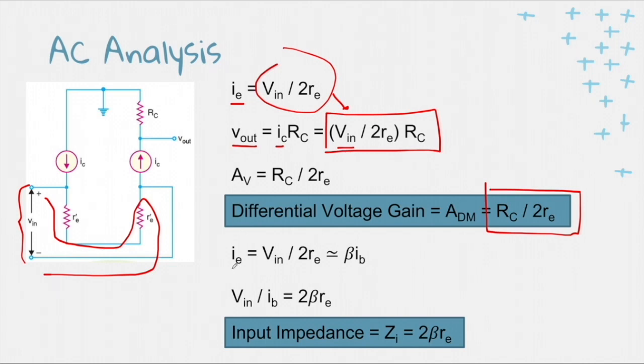And since IE is equal to IC, because this is just a series circuit here. So IE is going to be Vin over 2re. And it's approximately equal to IC, which is equivalent to beta IB. So we can now take the ratio of Vin over IB for us to take the input impedance. And now the input impedance is equivalent to 2 beta re.